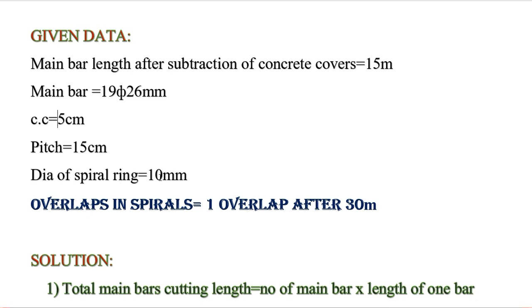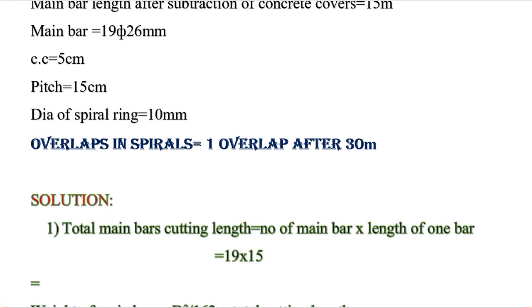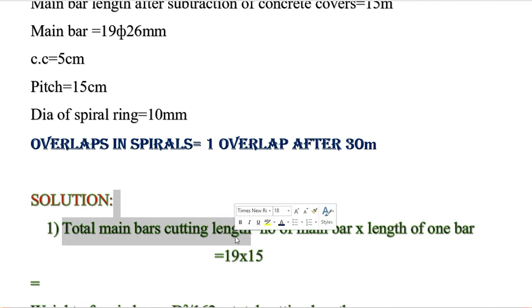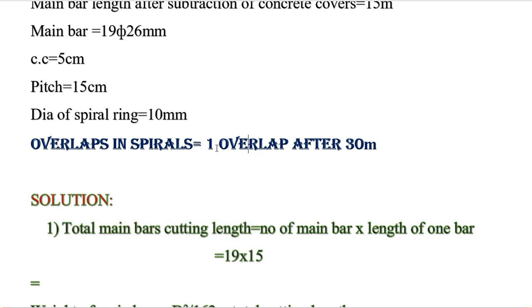Diameter of spiral ring is 10 millimeter. One more thing: there is one lap after each 30 meter length of spiral. So in the spiral ring cutting length, we also have to calculate the overlap lap length.